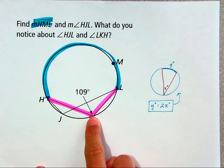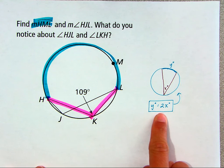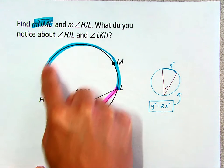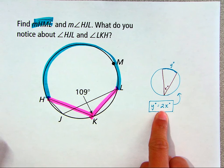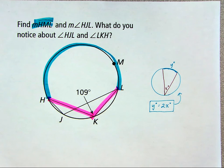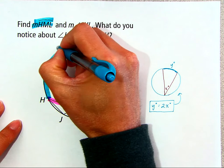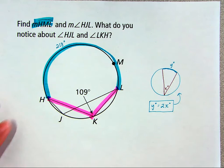And so because we have the measure of that inscribed angle, 109 degrees, we can use this relationship to find the measure of the arc. We just double the inscribed angle. So that would be 218. So we'll go ahead and label that here, 218 degrees.